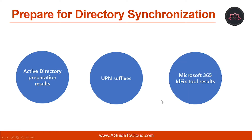While the Microsoft 365 readiness check provides valuable information about your environment, it does not resolve any issues identified by the tool. Instead, resolving these issues is the job of the Microsoft 365 IDFIX tool, which identifies and remediates the majority of object synchronization errors in your Active Directory forest in preparation for deployment to Microsoft 365. This remediation enables you to successfully synchronize users, contacts, and groups from your on-premises Active Directory into the Microsoft 365 environment.